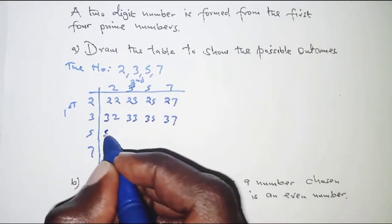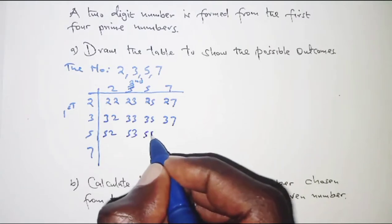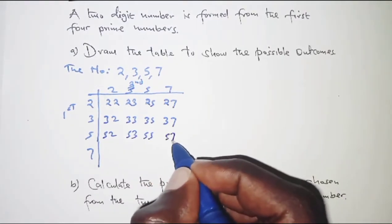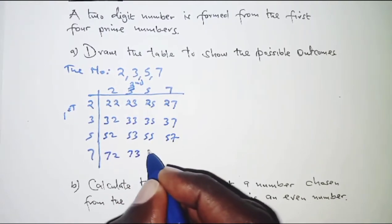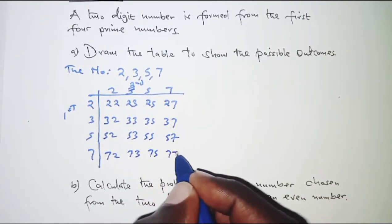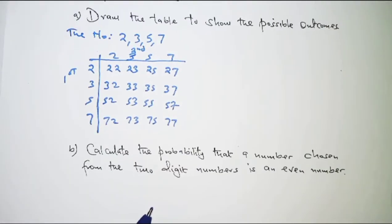Then 52, 53, 55 and 57. And finally 72, 73, 75 and 77. This is the list of all possible outcomes.